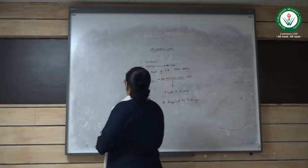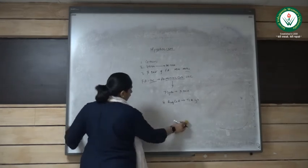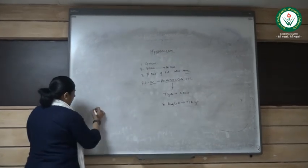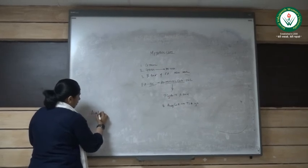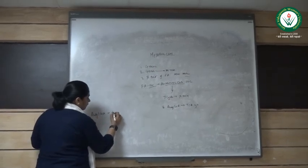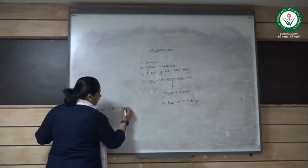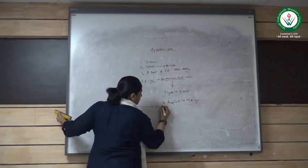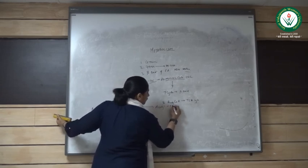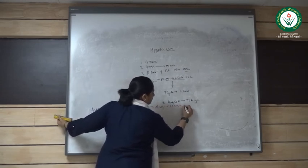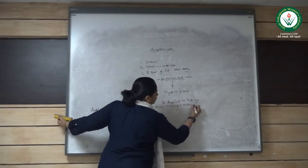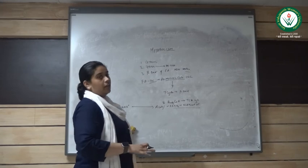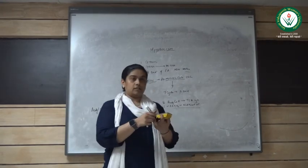So if we write the basic overall reaction of beta-oxidation of fatty acid: acyl coenzyme A plus FAD plus NAD plus coenzyme A yields acetyl coenzyme A plus FADH2 plus NADH. So here it is the end of metabolism of fatty acid. Thank you.